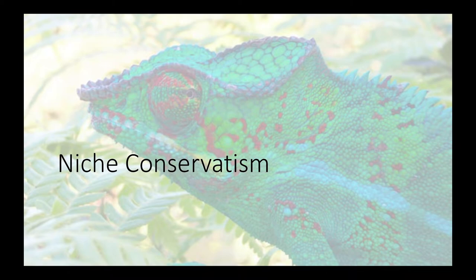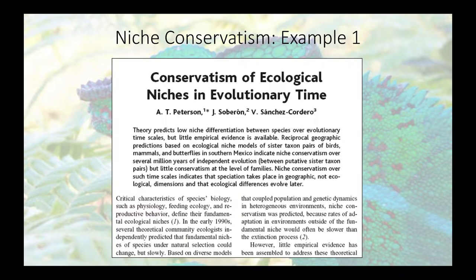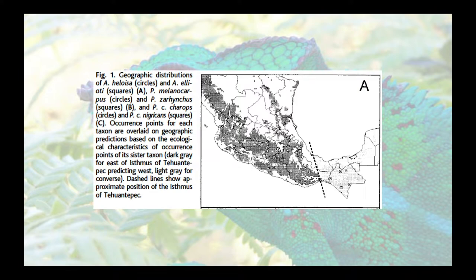So first let's talk about niche conservatism. Going back to 1999, Jorge Soberon, Victor Sanchez Cordero, and I published a paper in Science. Essentially what we did was ask how frequently sister species pairs share the same niche, using a geographic feature in Mexico called the Isthmus of Tehuantepec. Here's one example: a tiny hummingbird called Athus heluisa and its sister species, Athus elioti. You can see Mexico and this bottleneck called the Isthmus of Tehuantepec.